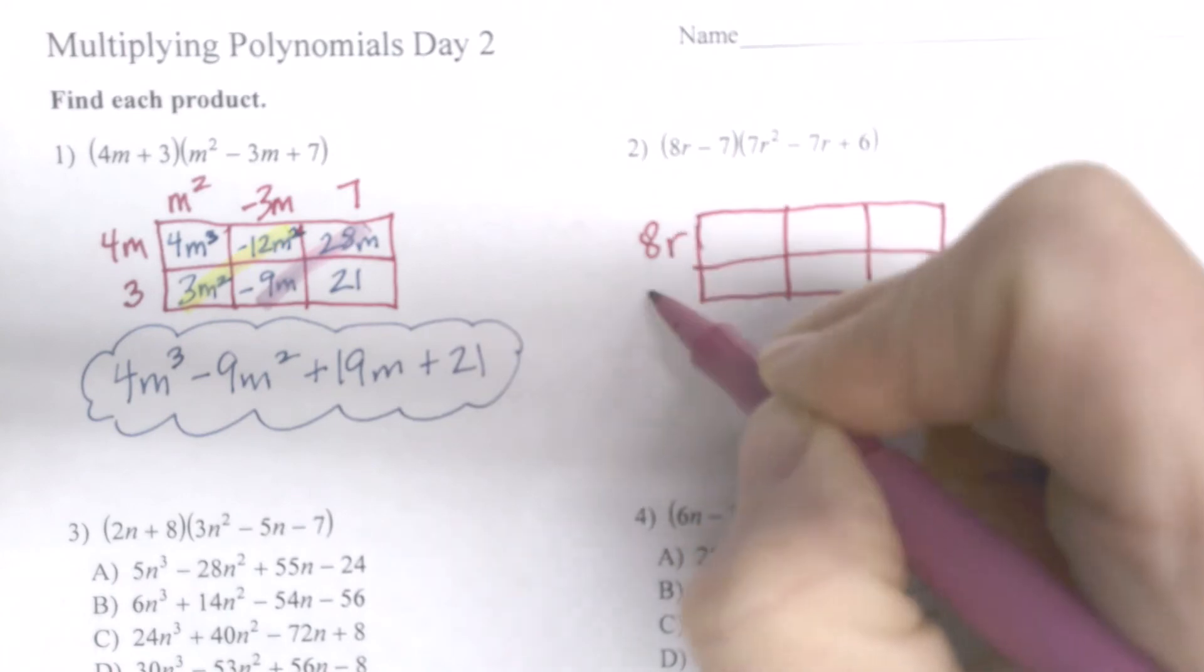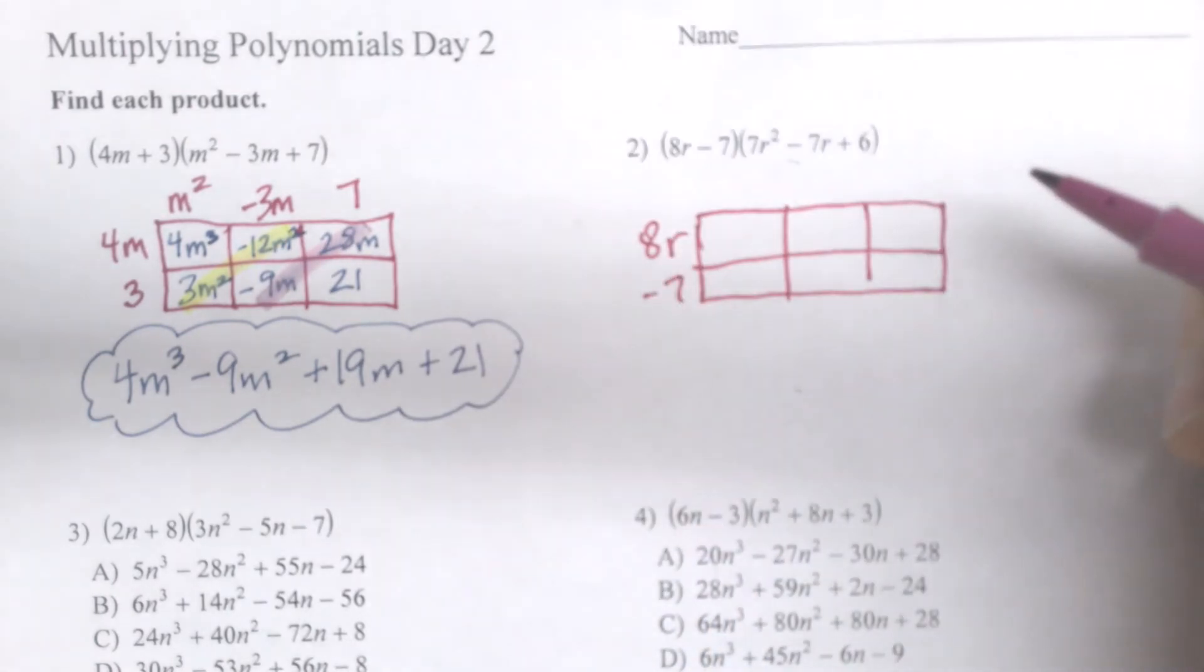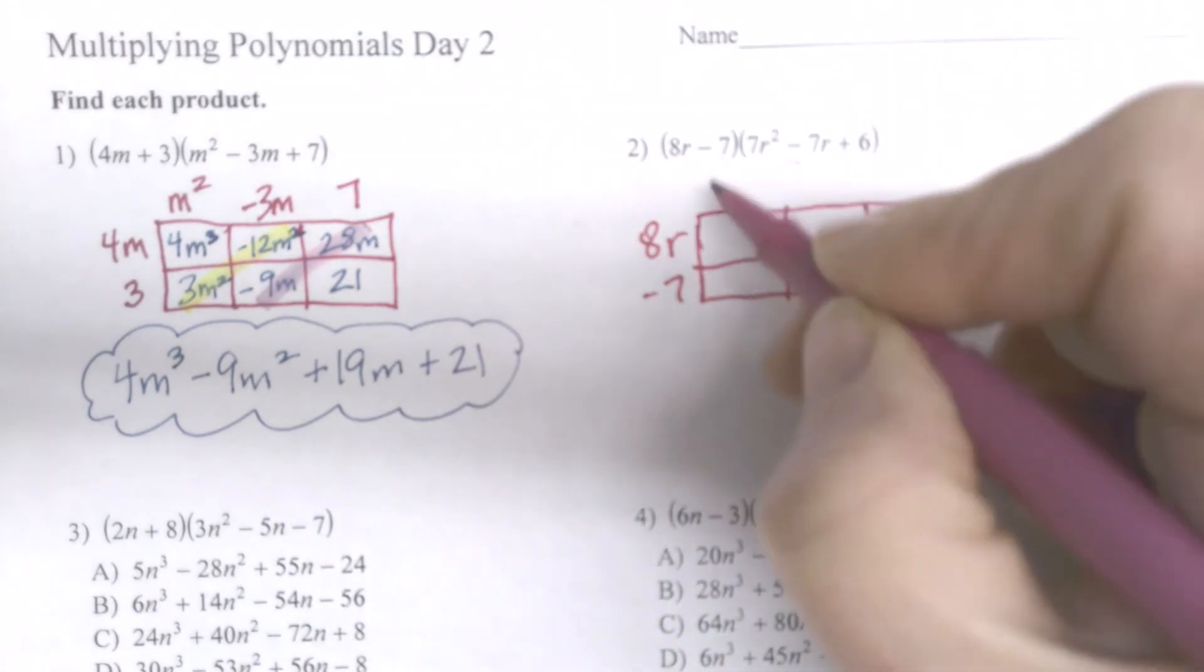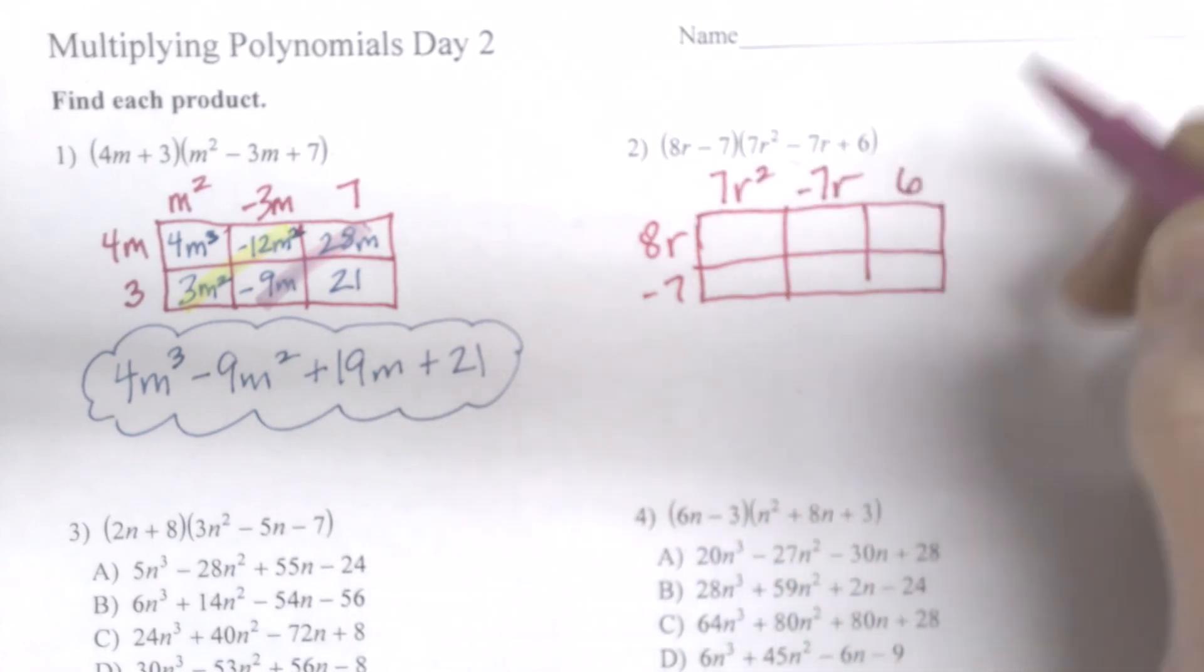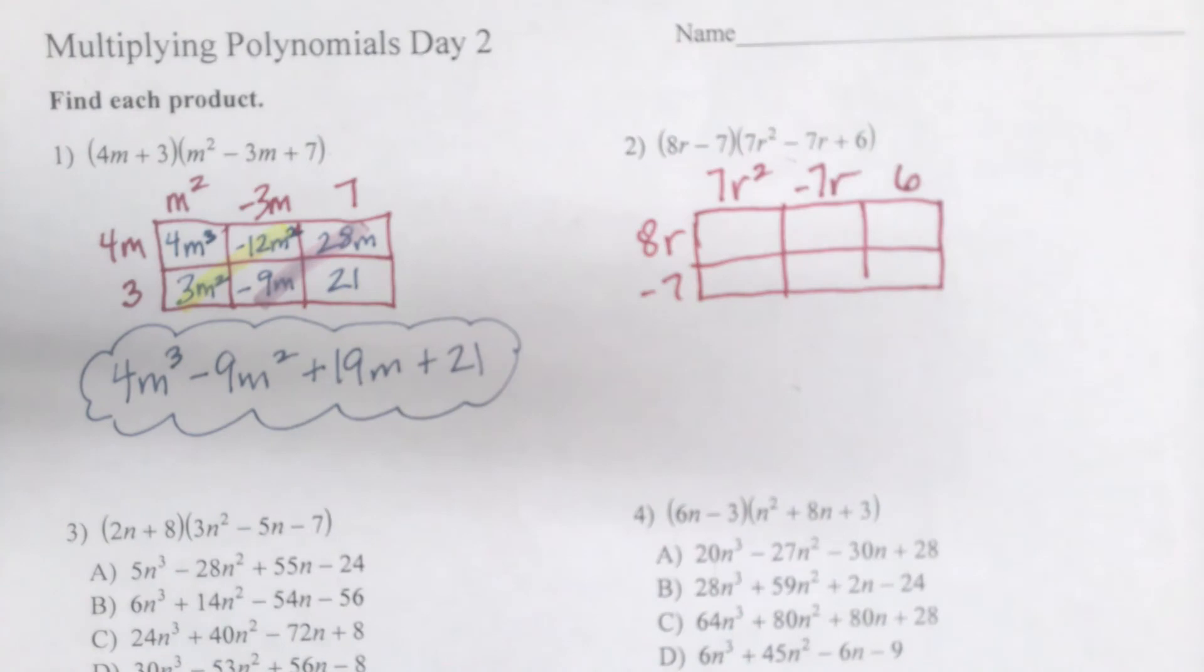And I have 8r and negative 7 down the two side. Then I have 7r squared, minus 7r, and 6. And again, I'm just going to go through and multiply.